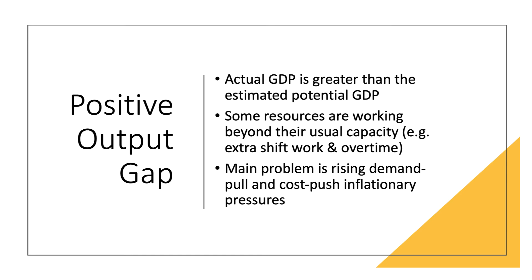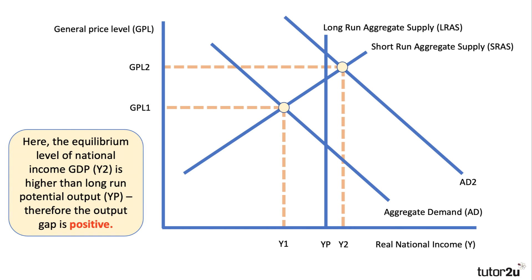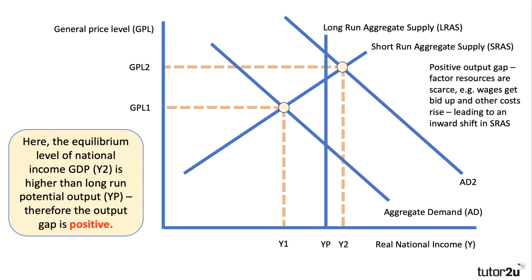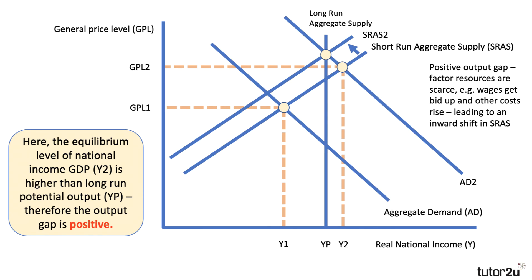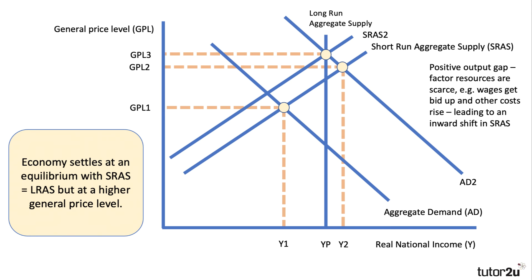In a boom, some scarce resources are working well beyond their usual capacity — you might need shift work and overtime. Businesses have to start bidding up prices to get the raw materials, components, and workers they need. The rate of wage inflation goes up, higher costs of supply cause an inward shift of short-run aggregate supply, and that tends to take the economy back towards potential output. Real growth slows, the price level rises to GPL3, and as prices rise, real incomes fall, so there may be movement back up the demand curve. Classical theorists argue the economy will settle back at potential output, but now at a higher price level.